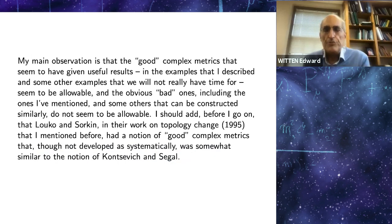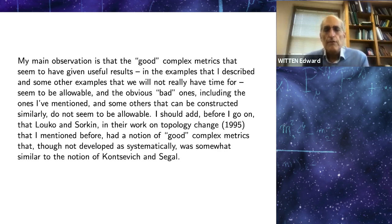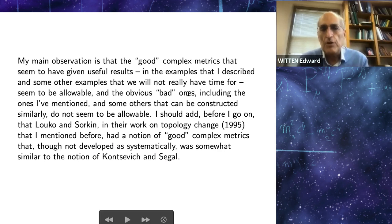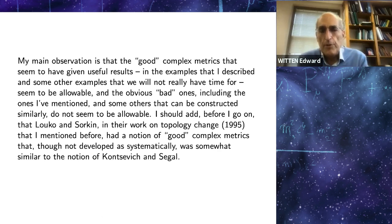The main observation in my talk is that the good complex metrics that seem to have given useful results in the examples I've described seem to be allowable in the sense of Kontsevich and Segal. And the obvious bad ones, including the ones I've mentioned and others that can be constructed similarly, don't seem to be allowable.